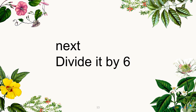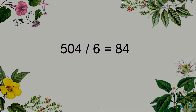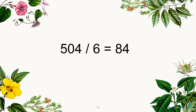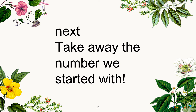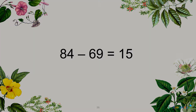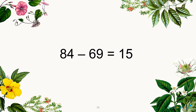Next, divide it by 6. 504 divided by 6 is equal to 84. Next, take away the number we started with. We started with 69 and now we have 84, so 84 minus 69 is equal to 15.